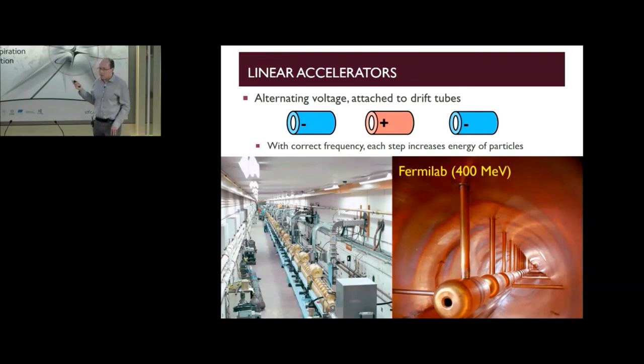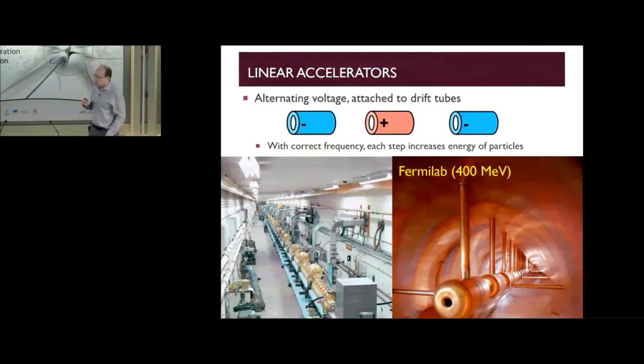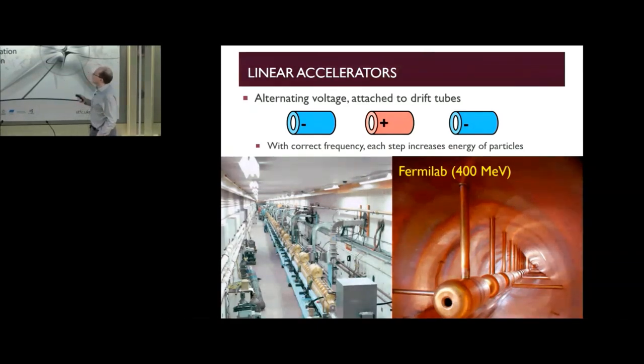With linear accelerators, if you want to go up to higher and higher energies to find out more about smaller and smaller features of matter, then you can increase the voltage across any pair of these stages or you can also add many more drift tubes in the sequence. You can keep on doing this essentially forever, as long as you carefully calculate the length of each of the drift tubes to match the speed of the particle at that point.